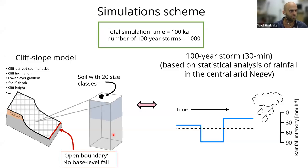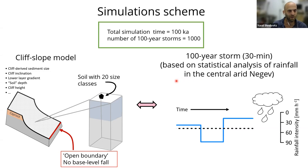The main simulation scheme is event-based, similar to hydrological modeling. We simulate the 100-year storm 1,000 times, which should be equivalent to 100,000 years in total. The base storm is based on statistical analysis of rainfall in the central Negev — you can see the rainfall intensity graph with the scale flipped. To determine the factors governing whether cliffs become buried or not, we varied many parameters including cliff inclination, sediment size from the cliff, lower layer gradient, and so on.